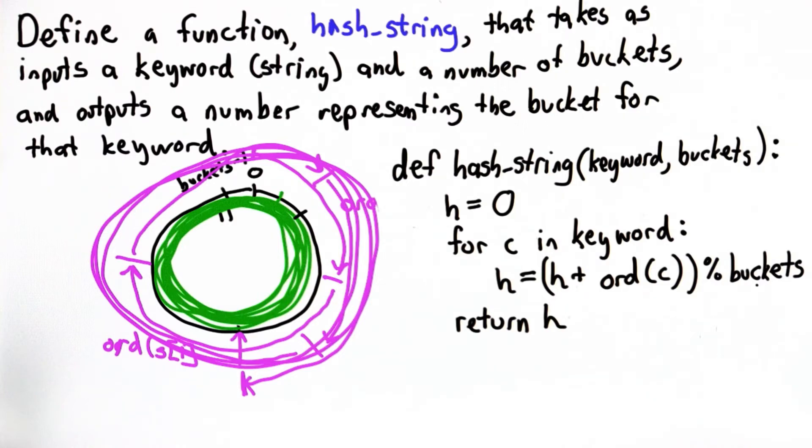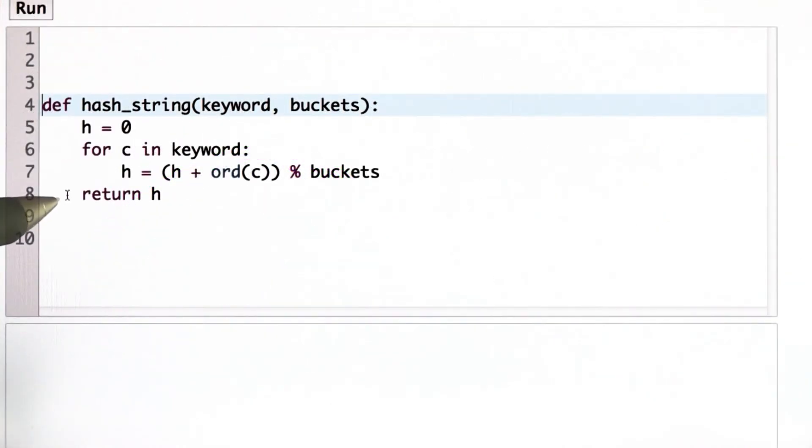Let's try this in the Python interpreter. So here's the code that we wrote out on the sketch pad. We have our variable h, which is going to keep track of the hash value. We're going to go through all the characters in the keyword, adding each one into the hash value, modulo the number of buckets.